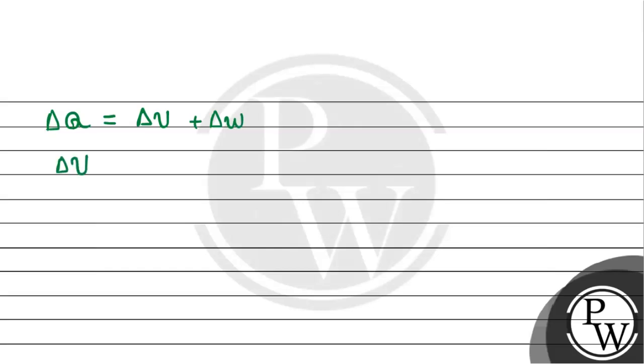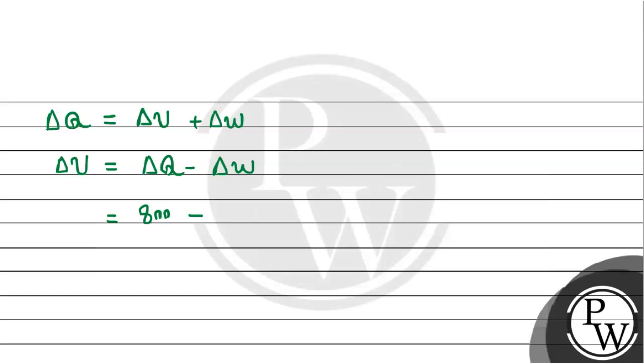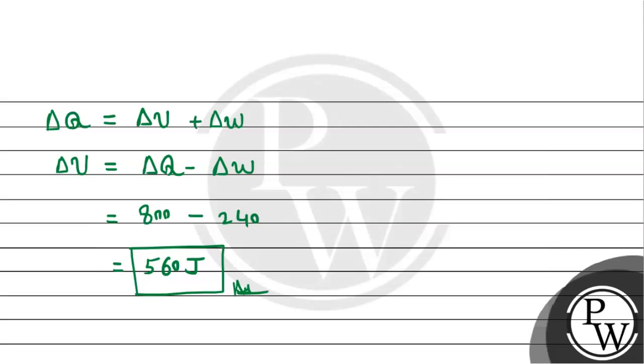The change in internal energy must equal ΔQ minus ΔW. So ΔU = 800 - 240 = 560 J. Therefore, this is the required answer for this question. As per the given options, option A is correct. This is the required solution. I hope you understand. Thank you.